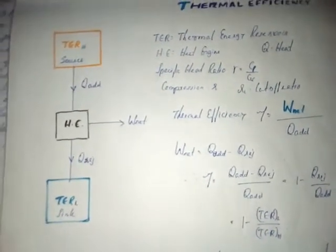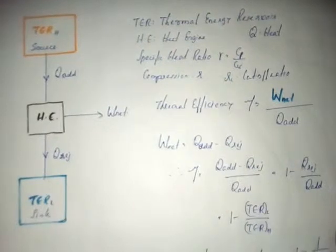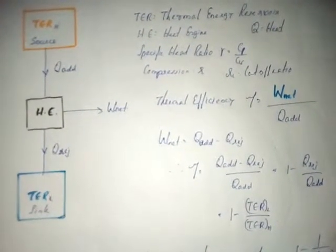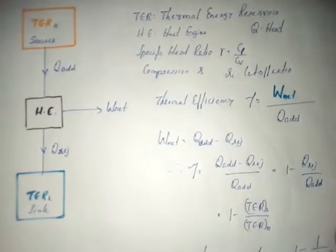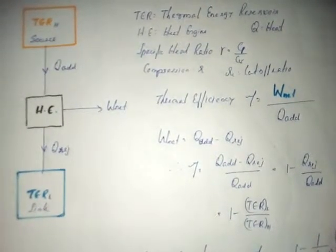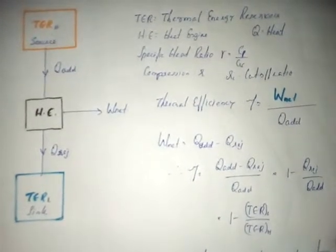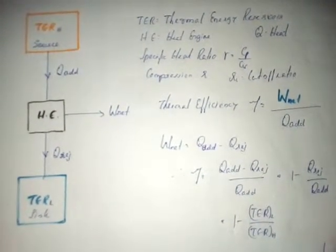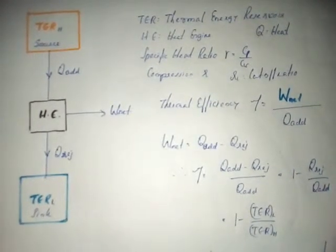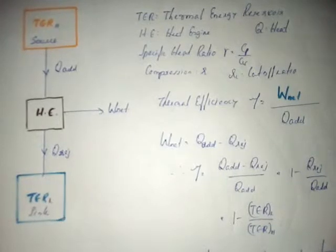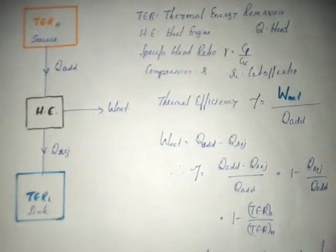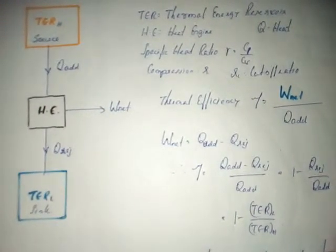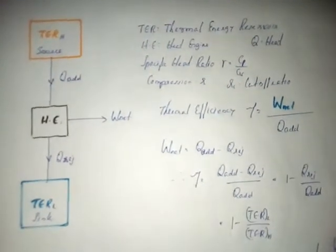Today I am going to explain what is thermal efficiency. Thermal efficiency is associated with the heat engine. Most of the automobiles running today use internal combustion engines. The internal combustion engine is a heat engine — all engines that produce work by combustion of fuel or by adding heat are heat engines. The efficiencies associated with a heat engine include thermal efficiency and mechanical efficiency. Engineers are always trying to improve the thermal efficiency of an engine.